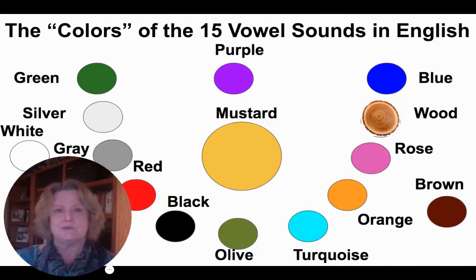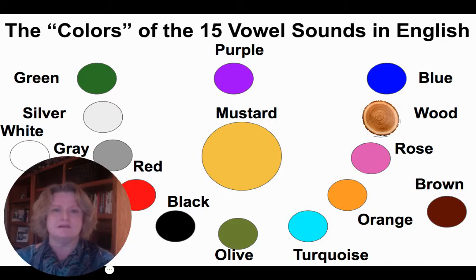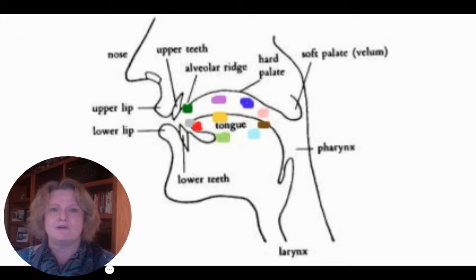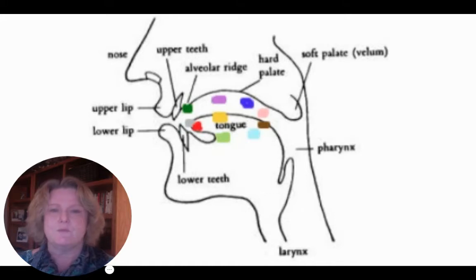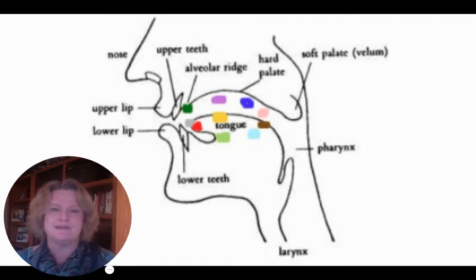Blue has U in it. Wood has U. Mustard has U. Olive has A. The arrangement of the colors reflects the speech organ — the mouth — where the tongue position is in relation to the roof of the mouth, the back of the mouth, the teeth, and how high or low.